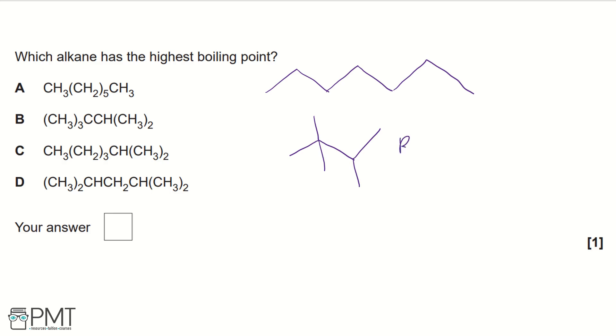Then for C, we have a straight chain for most except the end. So we have our CH3 attached to our CH2, another CH2, and then we're going to have our CH3s coming off the side. So this is C.